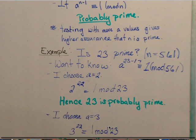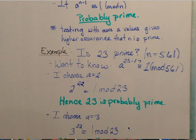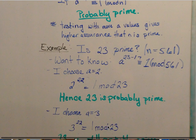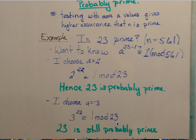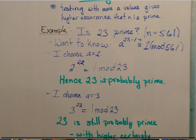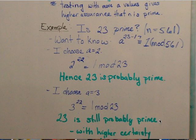If we calculate 3 to the 23 minus 1, or 22, it is also congruent to 1 mod 23. Therefore we can still say that 23 is probably prime, only with a higher certainty.